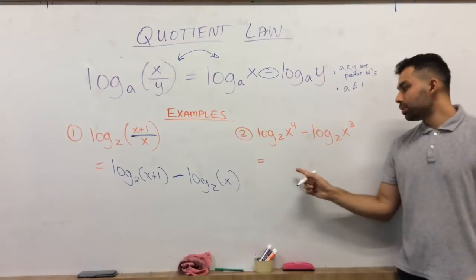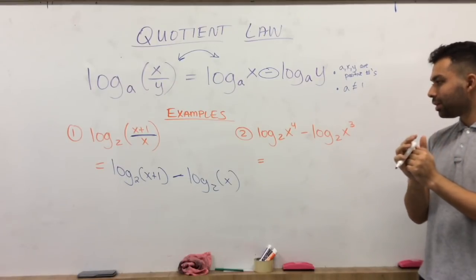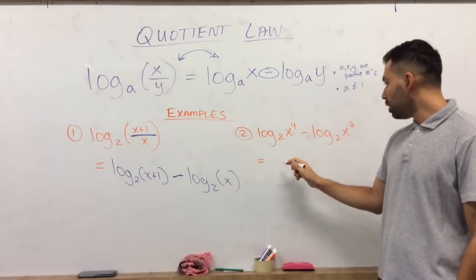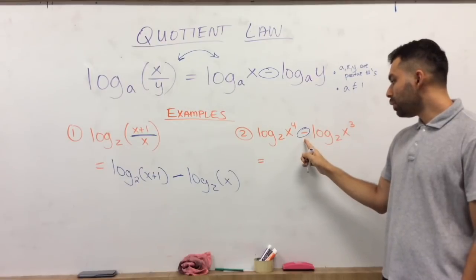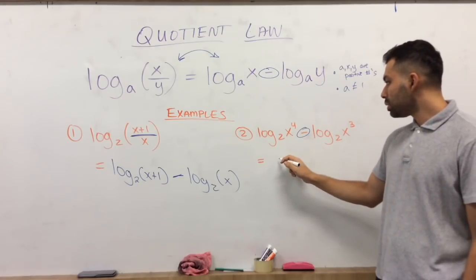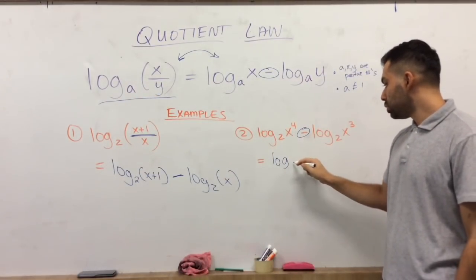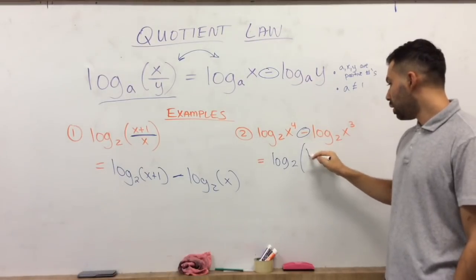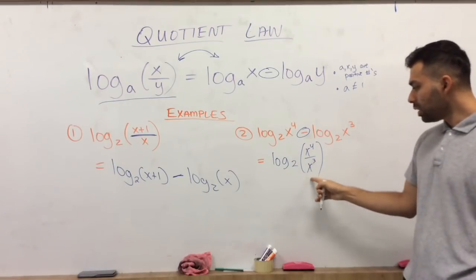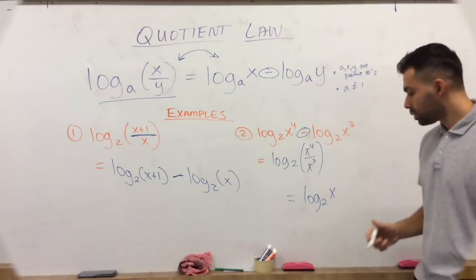All right, so when it comes to example 2, we have the expanded form. We are going to condense it, meaning make it smaller, into using the quotient law. Now, what we have here is, you've got to notice, we do have subtraction. We do have the same bases, so we can go ahead and put this in this form. So, we have log of base 2 of X to the 4th power over X to the 3rd power. Now, we can keep going with this. What we'll end up with is log of base 2 of X.